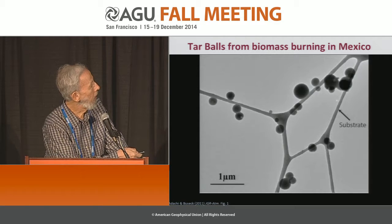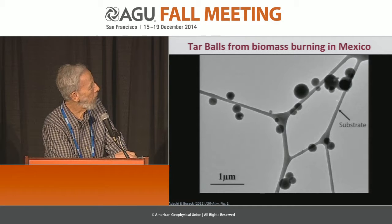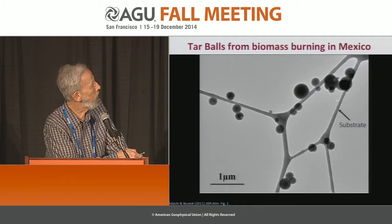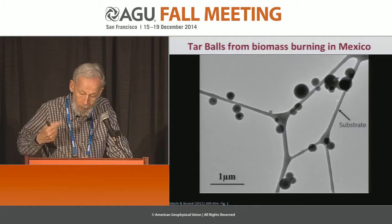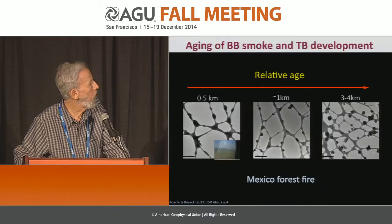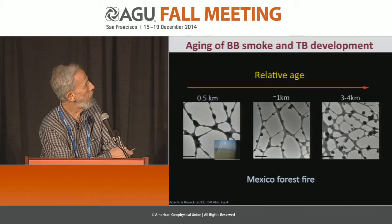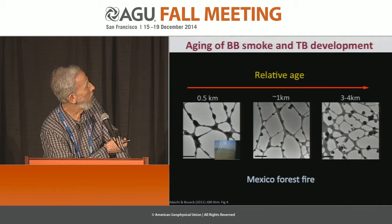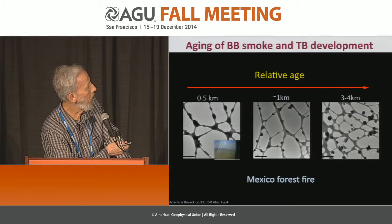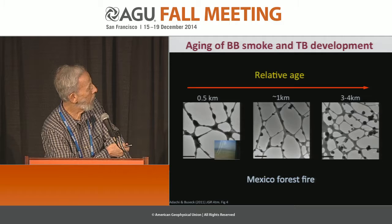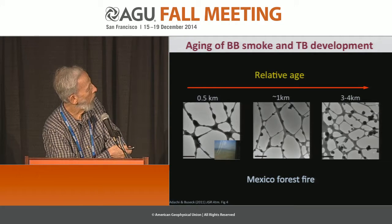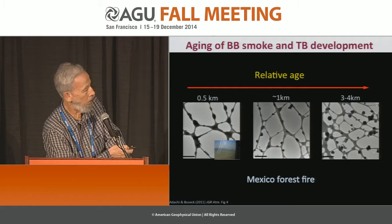This is what they look like in the TEM. The spider-webby stuff is substrate, but these spheres are tarballs, or what we call tarballs. This is from Milagro — close to the fire you can see the particles are quite viscous. And then as we get further and further away, the particles we trap are less viscous, ending up as tarballs.